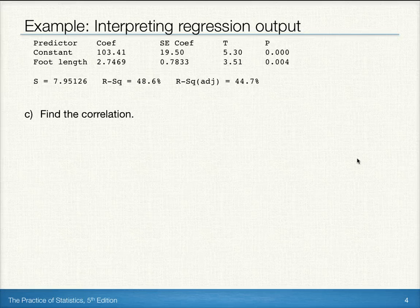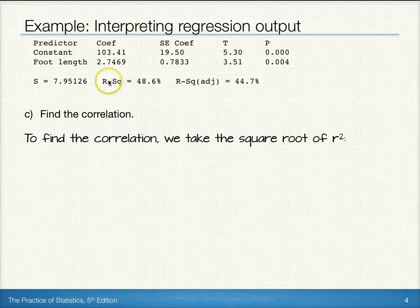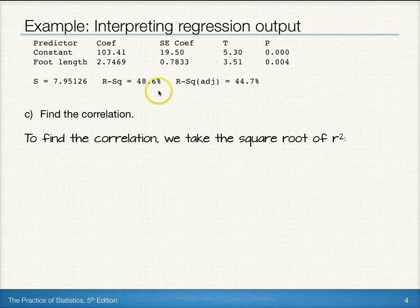Now let's find the correlation. Correlation can be found by taking the square root of r squared. We want r, not r squared, and we can see in our output here that we're given an r squared value of 48.6%.